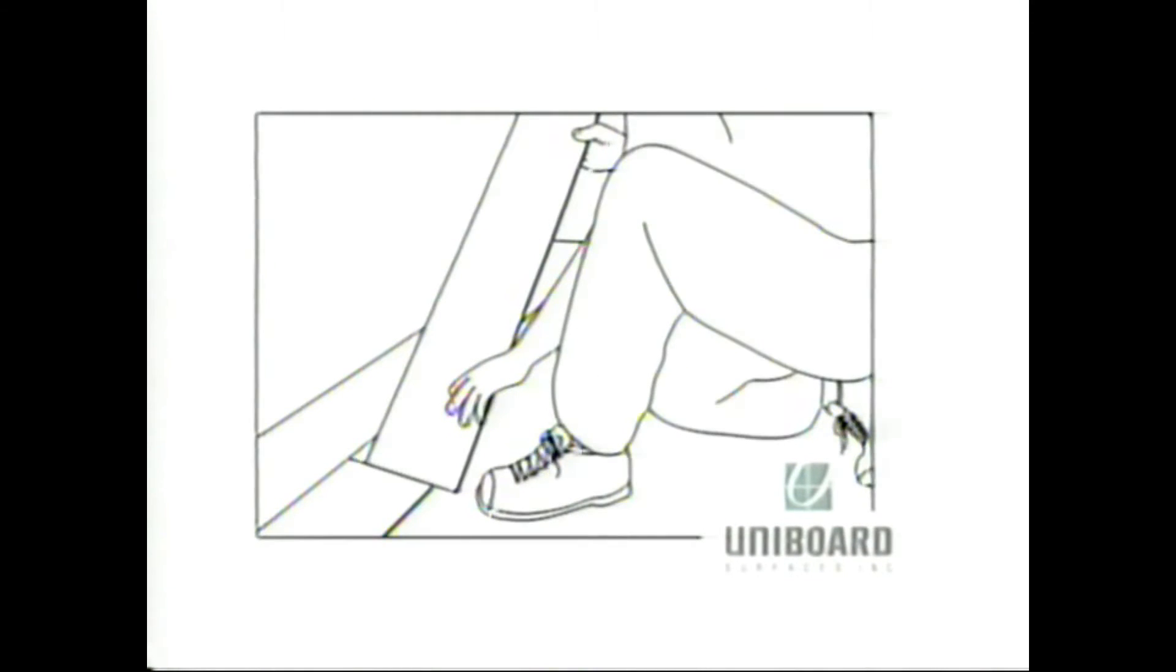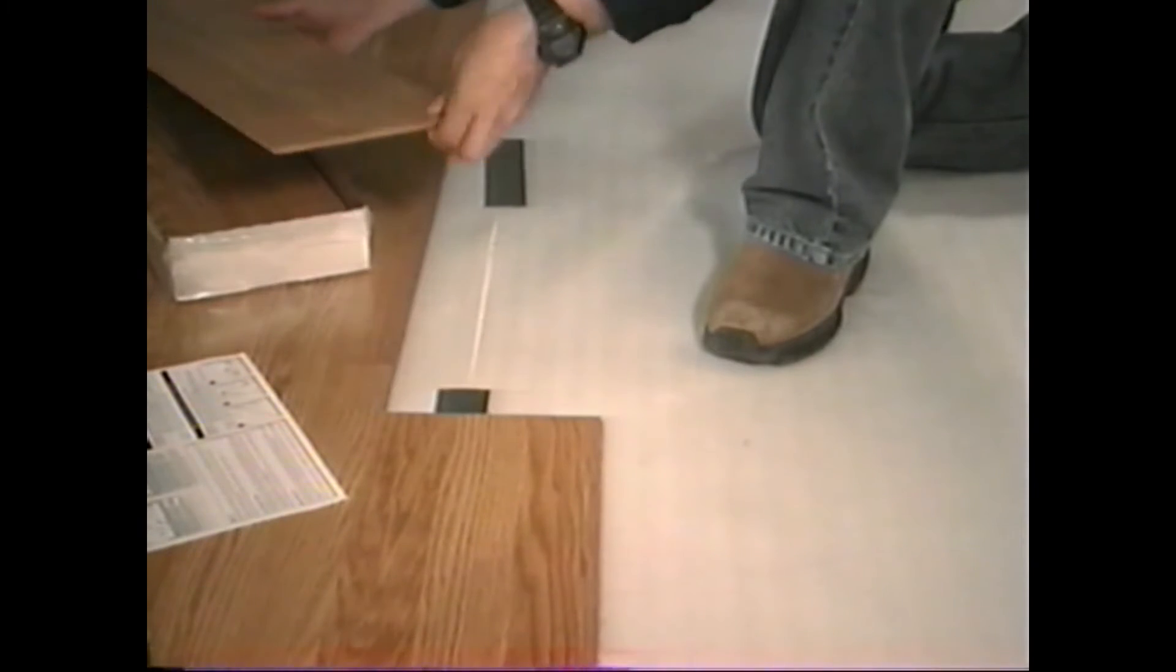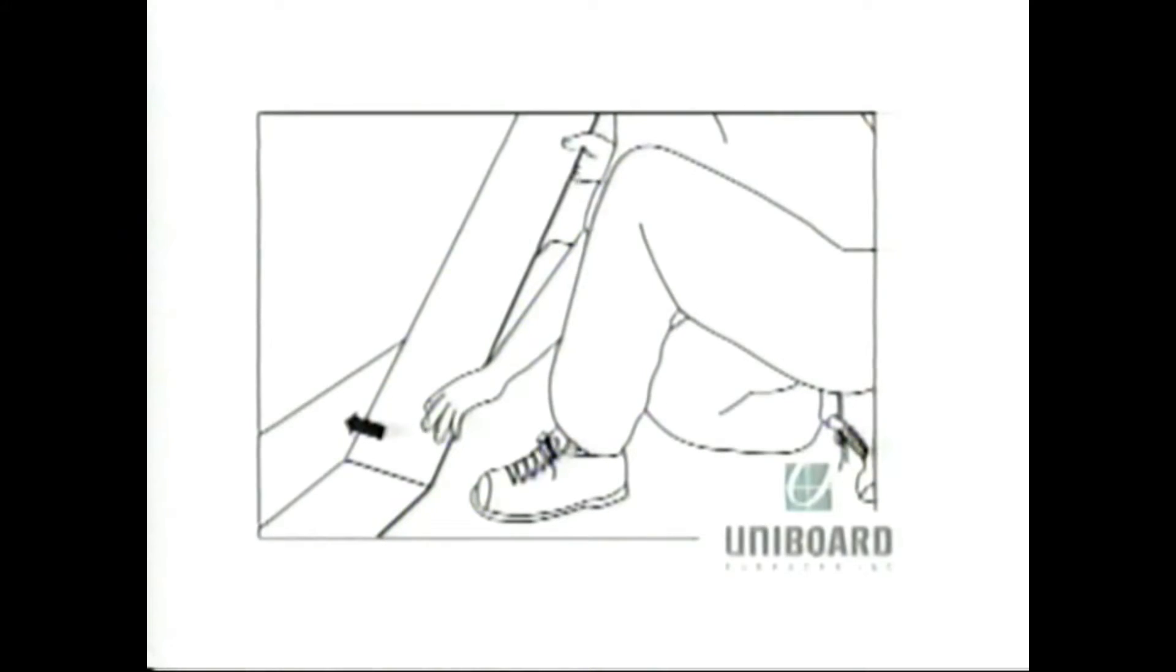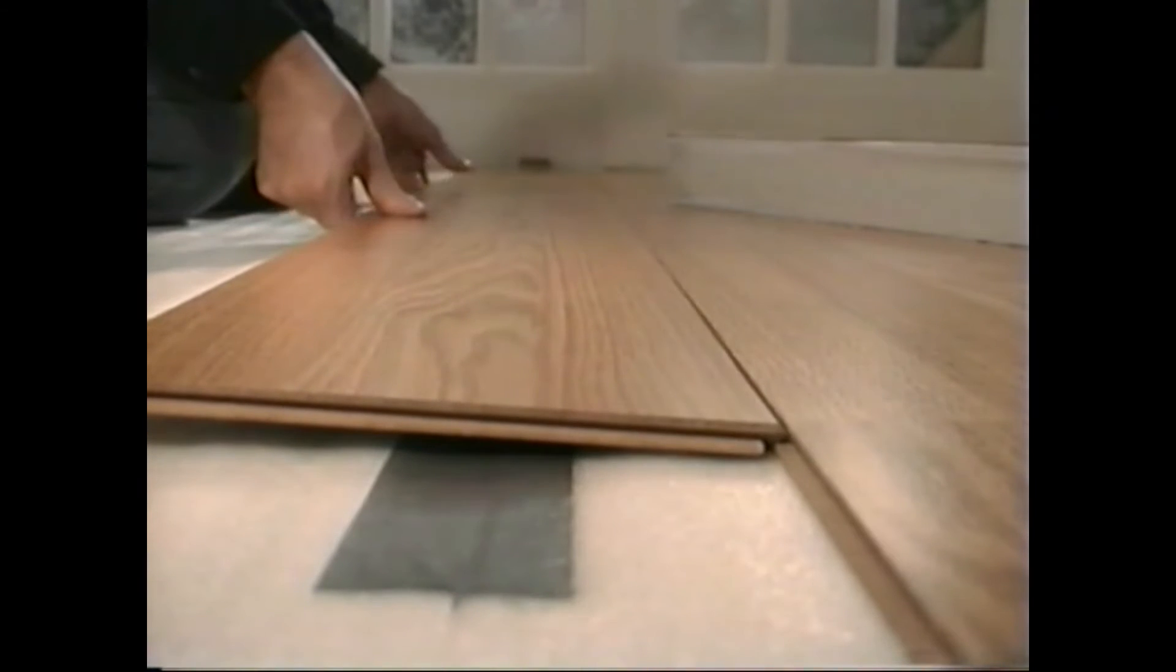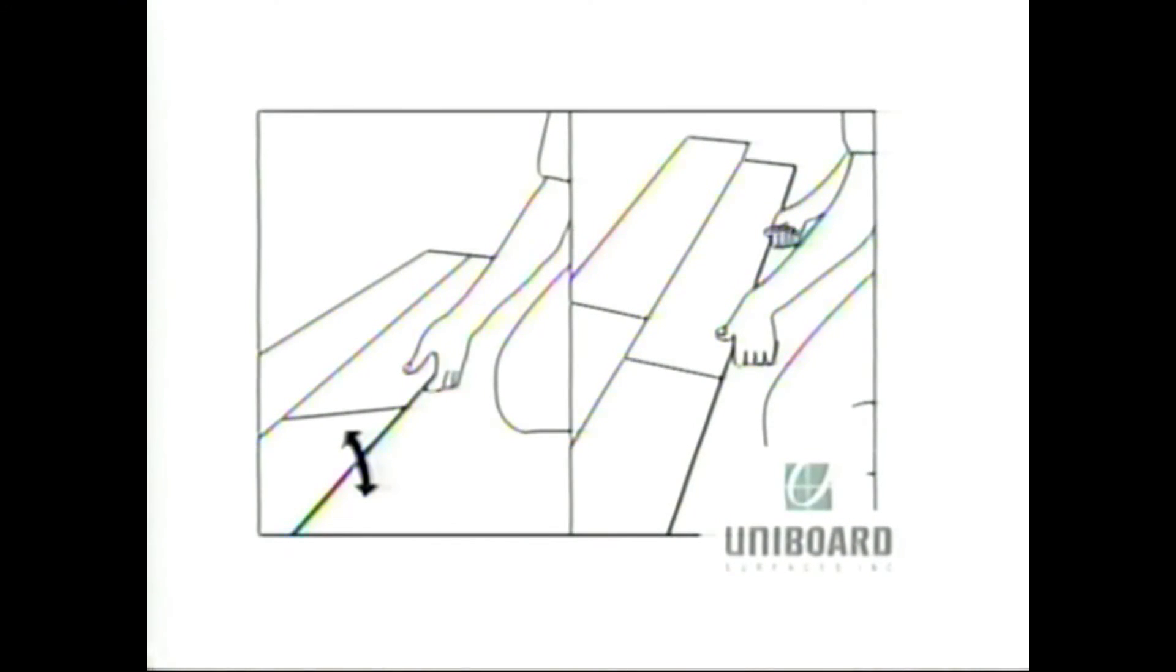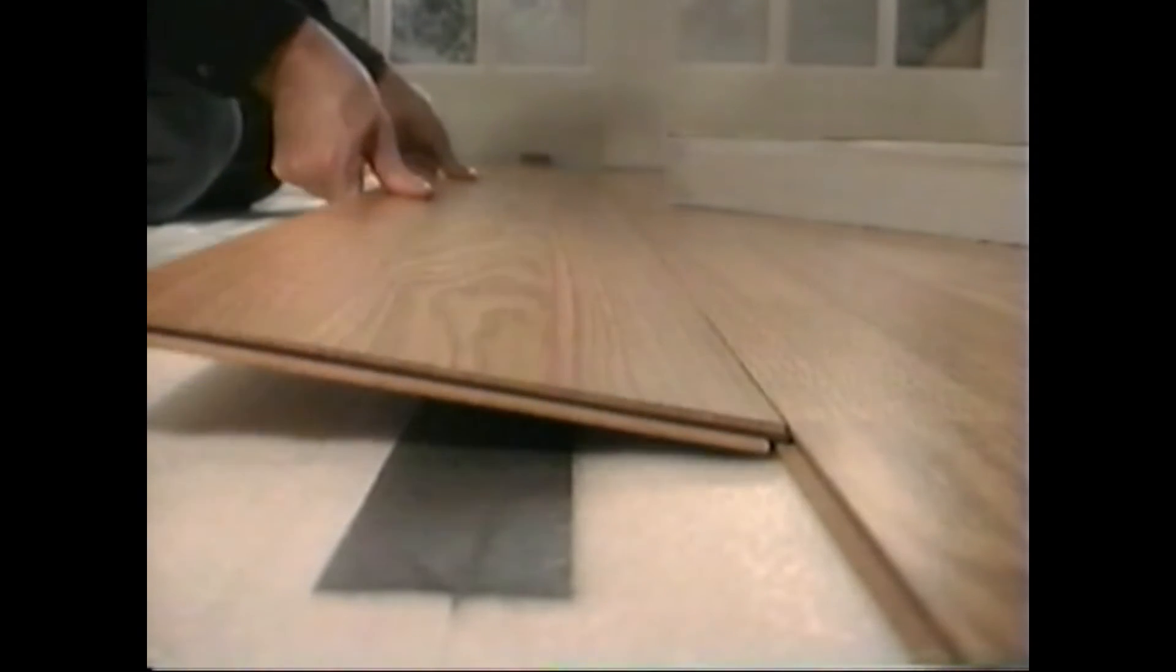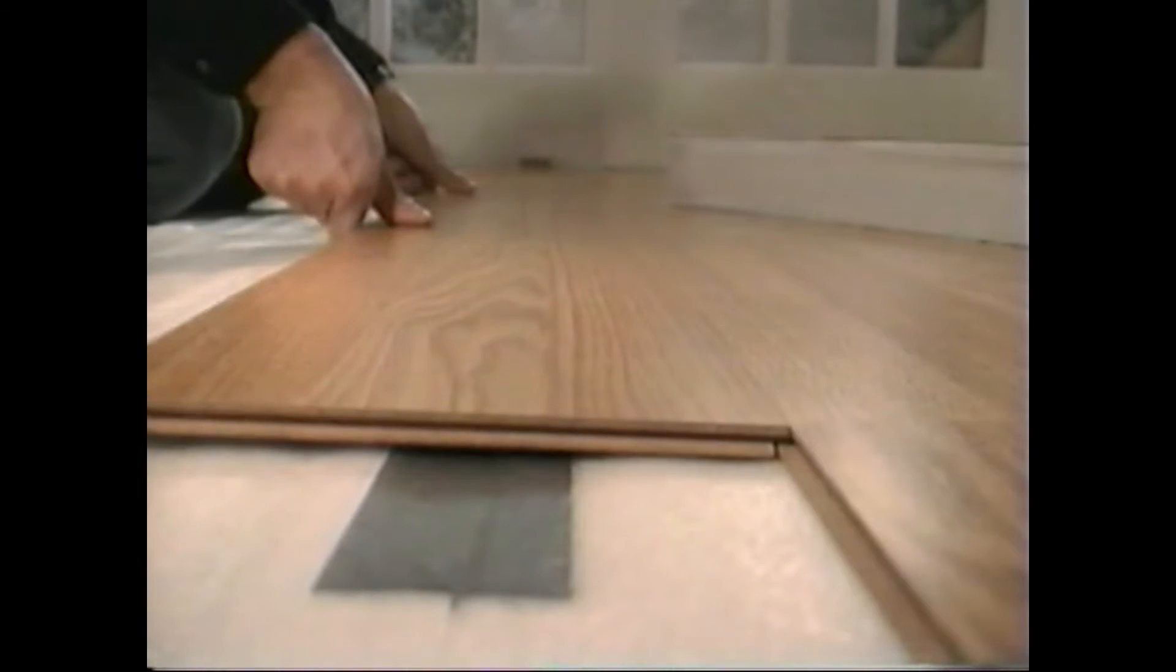Insert the end tongue of the plank in the end of the plank at a 45 degree angle. Slide the plank toward the previous row and lower onto the base floor. Slightly lift the row to allow the tongue to be perfectly inserted in the groove of the previous row. Shimmy up and down until the plank locks into place and lies flat on the base floor.